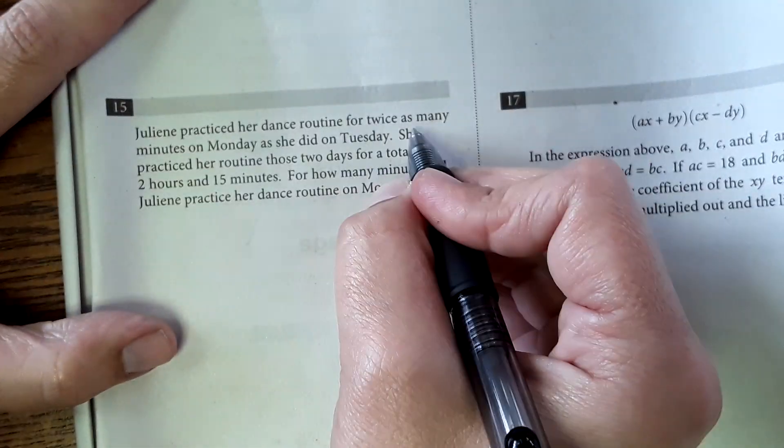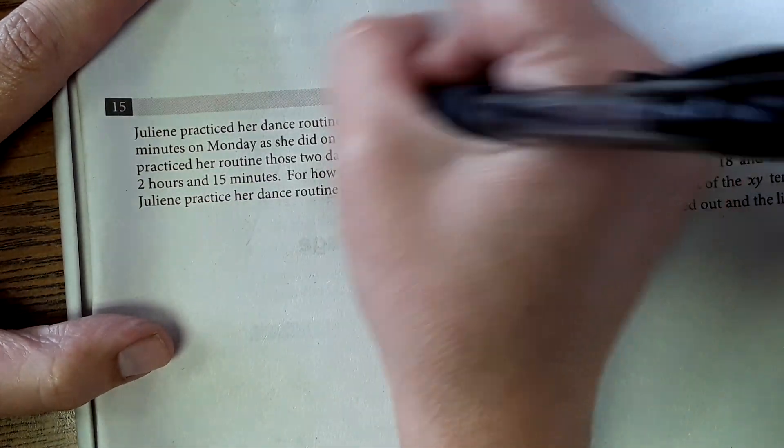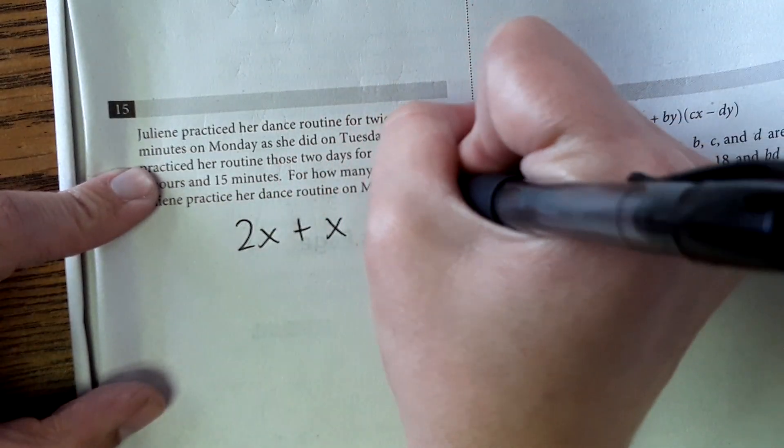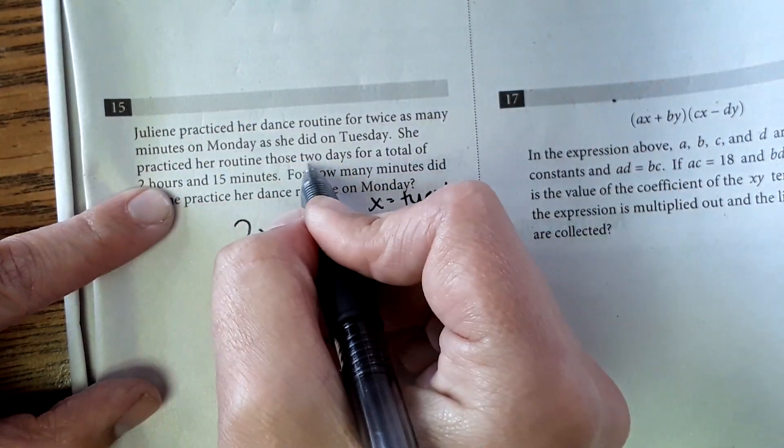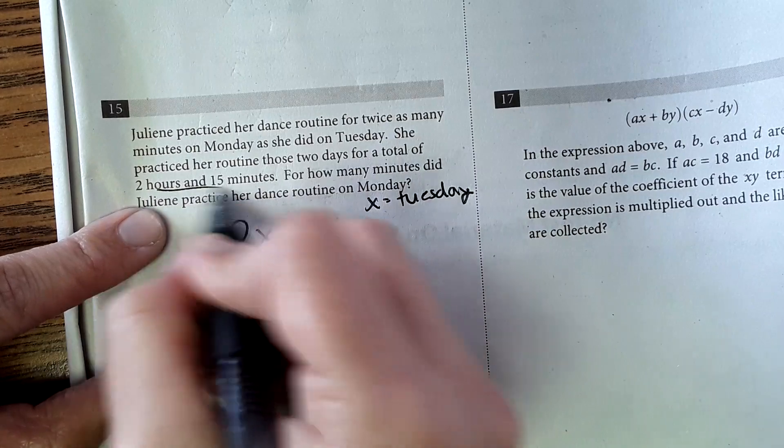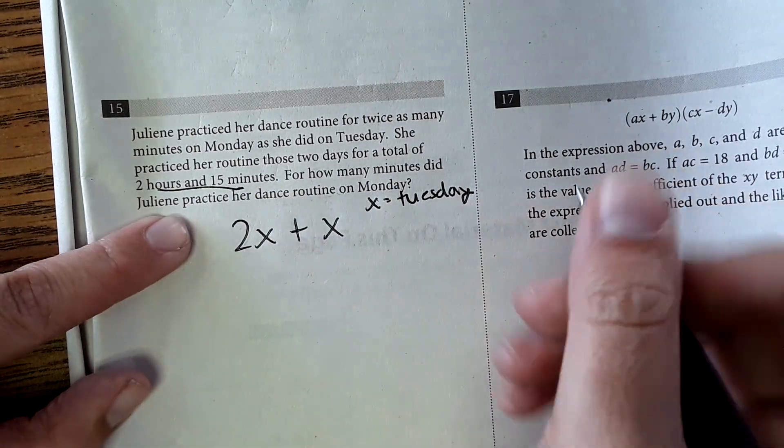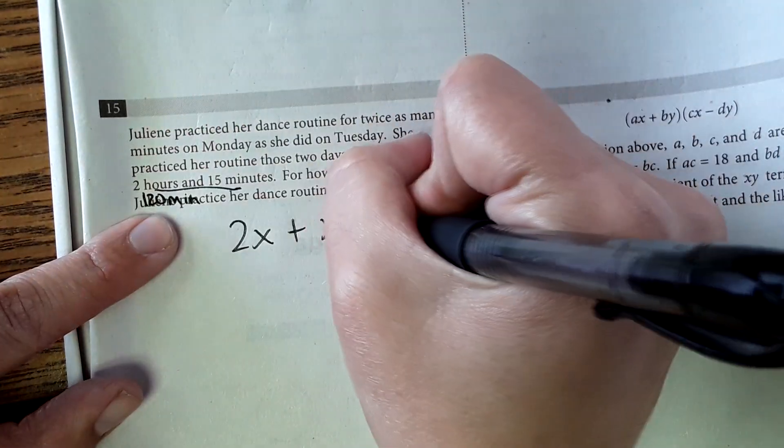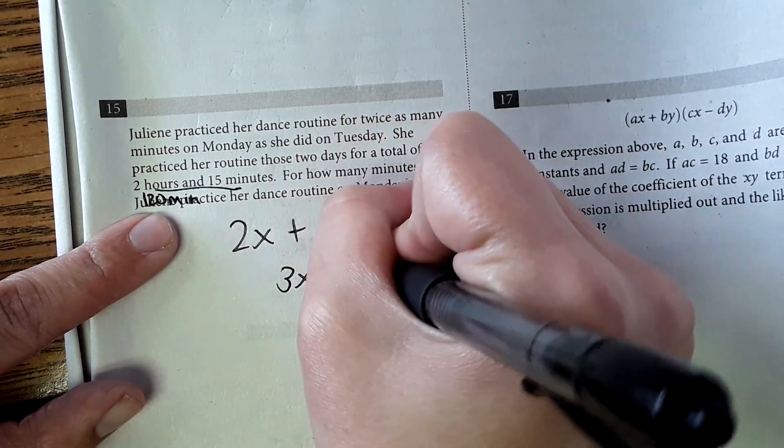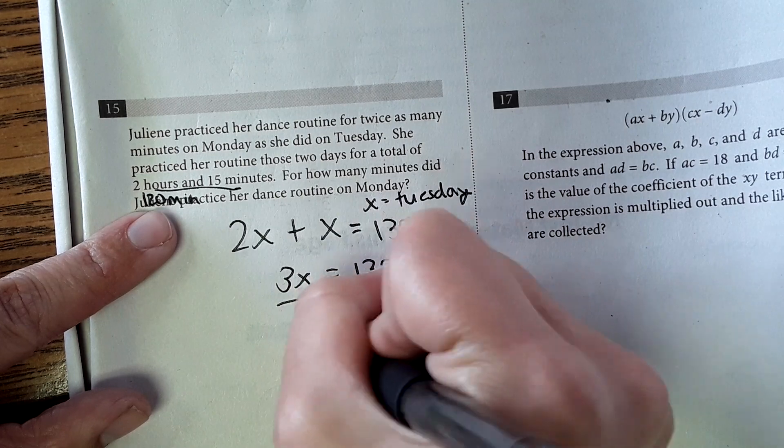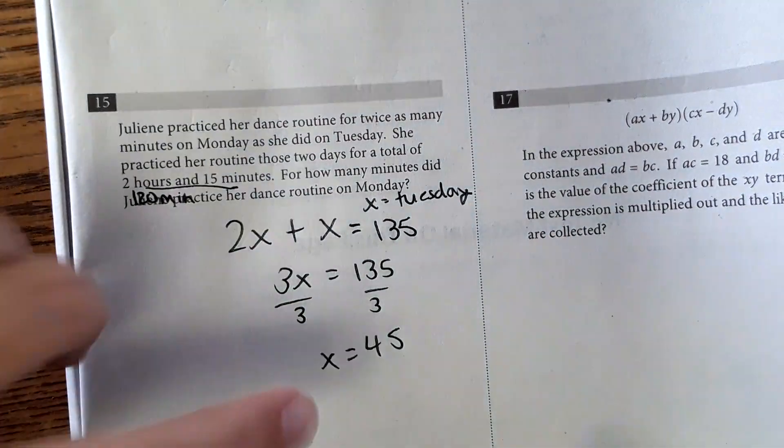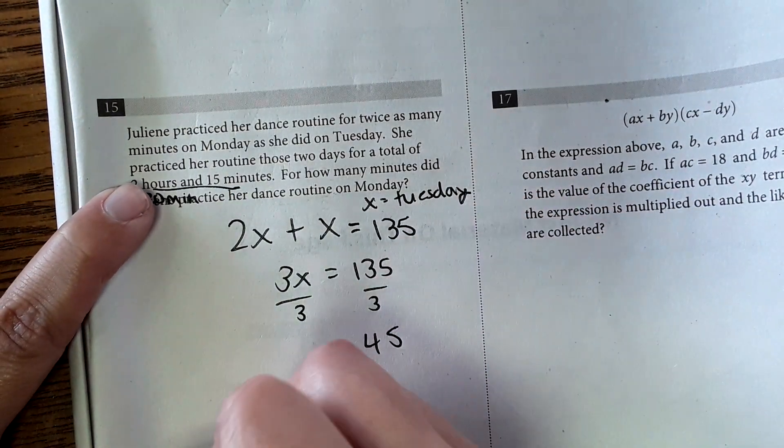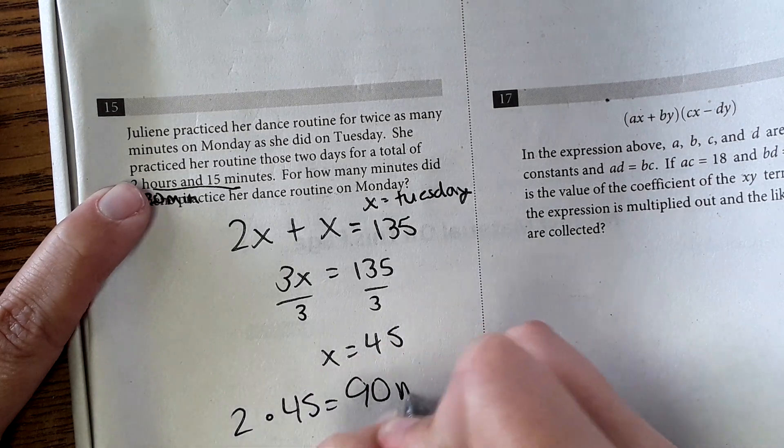Number 15. Julian practiced her dance routine for twice as many minutes on Monday as she did on Tuesday. So twice as many, that to me means 2x, plus Tuesday. So x is Tuesday. I need to make a note of that for myself. She practiced her routine for 2 days for a total of 2 hours 15 minutes. For how many minutes did Julian practice her dance routine on Monday? Okay, 2 hours 15 minutes. 2 hours would be 120 minutes, plus 15 would be 135 minutes. 3x equals 135. Divide by 3 and we get x equals 45. Now that I have this, but this was Tuesday and she did, she practiced twice as long on Monday. So 2 times 45 equals 90 minutes on Monday.